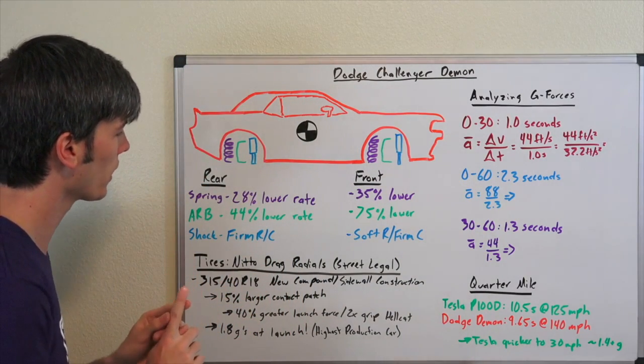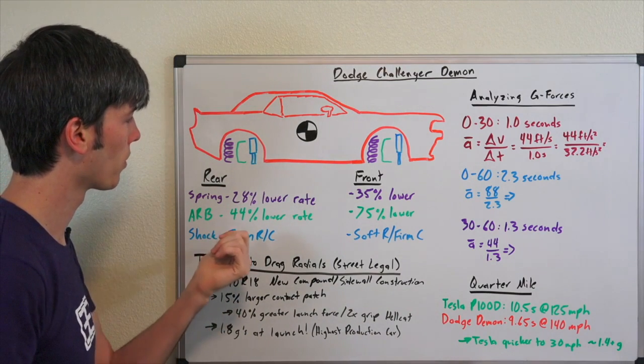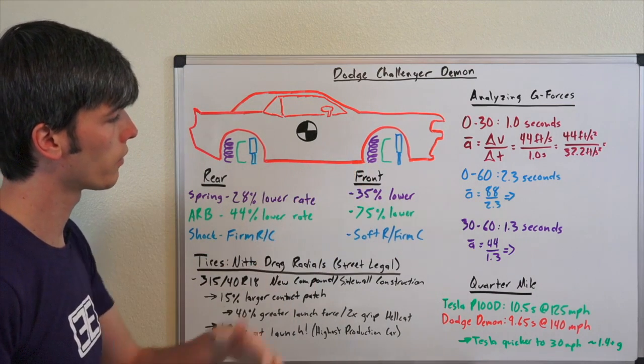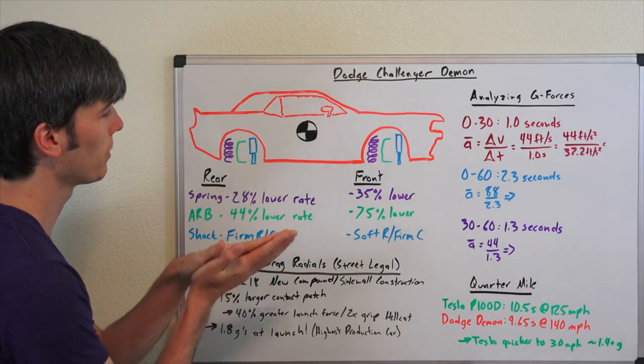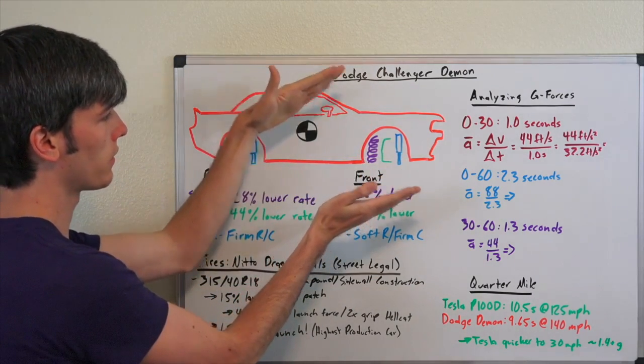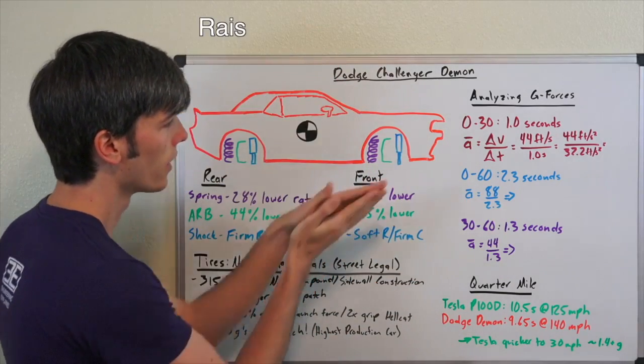The other thing they've done with the dampers is they have firmed up the rebound and compression in the rear. They have softened the rebound in the front and they have firm compression in the front. This means it's going to be stable in the rear. In the front it's going to allow it to lift up.